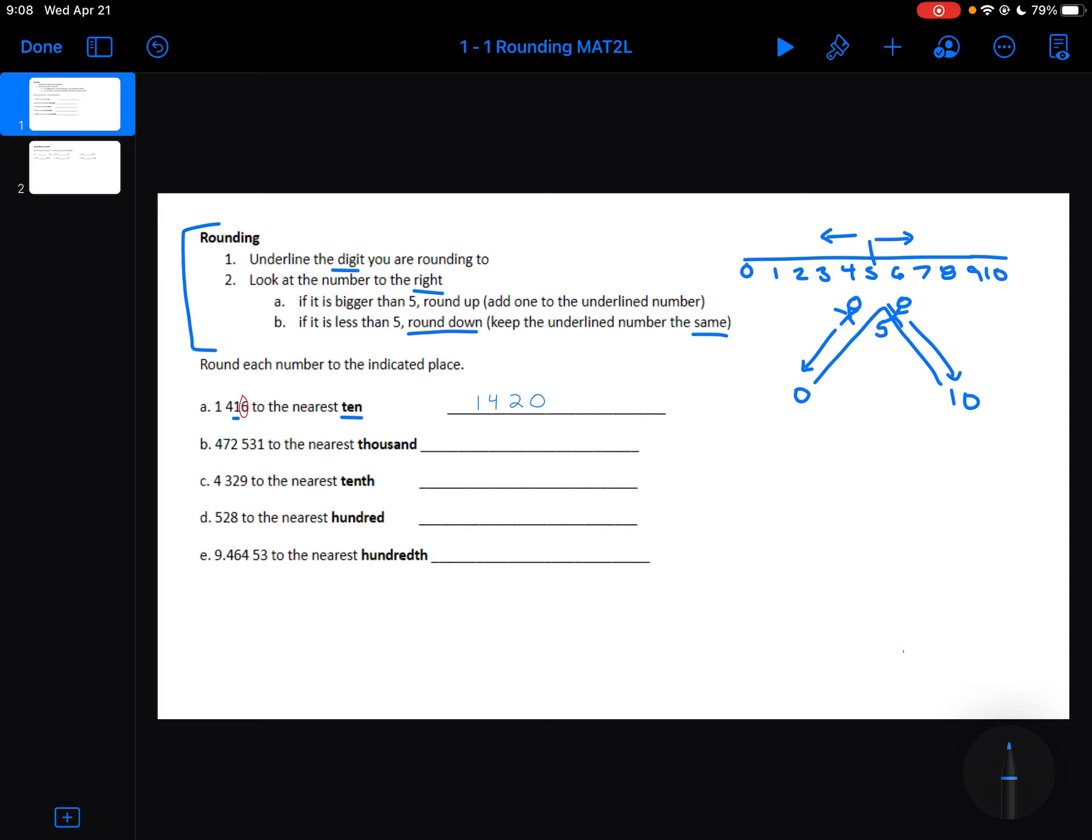So let's do another example. Now we're rounding to the nearest thousand. So I need to find the number in the thousands digit, which is the 2. The number immediately to the right is a 5. So our rules are 5 or greater, we're going to add 1 to the underlined number. And then everything after that changes to a 0. So 473,000.